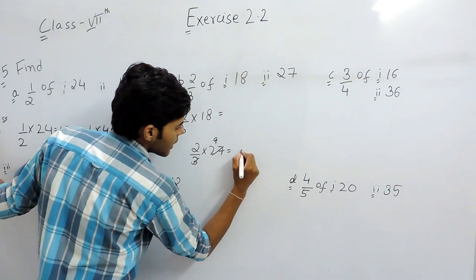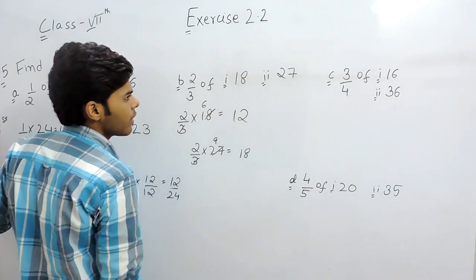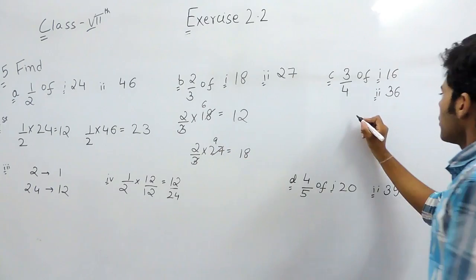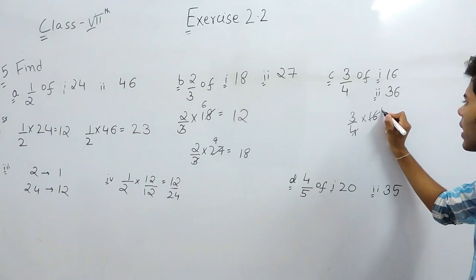3 9 times, that will be 18 and 3 6 times, that will be 12. Now the third part, we will multiply 3 upon 4 with 16.